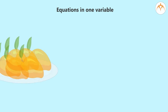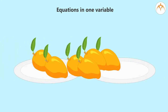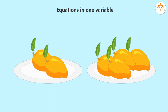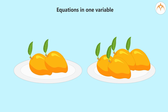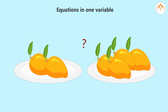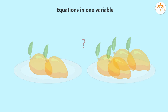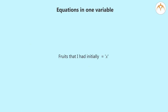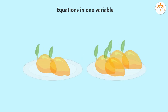Suppose I have some fruits. I gave four fruits to Chinmay and then two fruits remain with me. Can we find out how many fruits I had in the beginning? Since we do not know the number of fruits I had in the beginning, we will show it by the variable X.